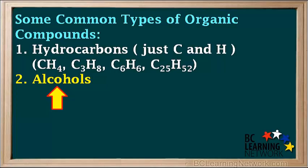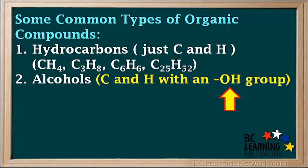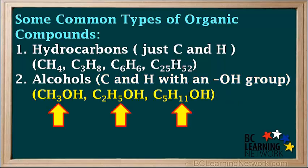Another common type of organic compound is alcohols. These contain carbon and hydrogen with one or more OH groups. Some examples of alcohols are methanol CH3OH, ethanol C2H5OH, and pentanol C5H11OH.